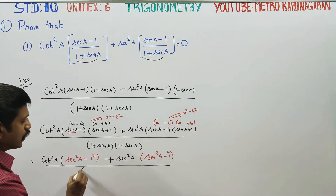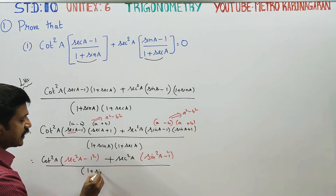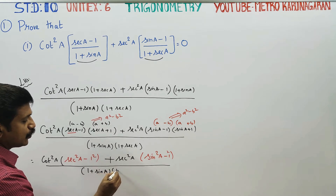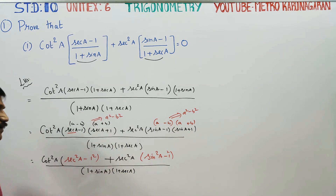The denominator is 1 plus sin A into 1 plus secant A. Right? That's what happens.